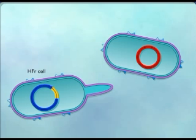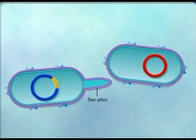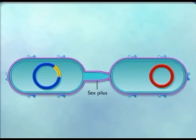The HFR is able to transfer some of the host genes to the recipient. The sex pilus contacts the recipient F-minus cell and pulls the cells together.